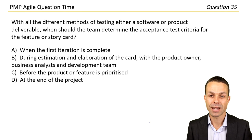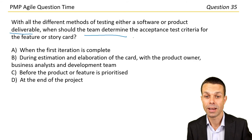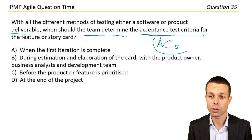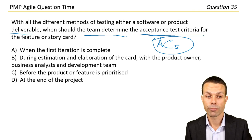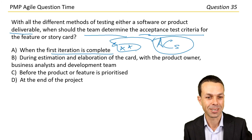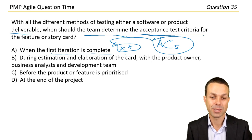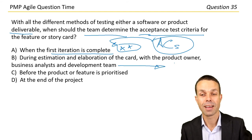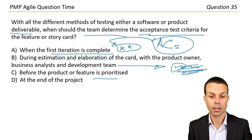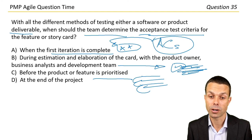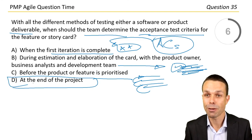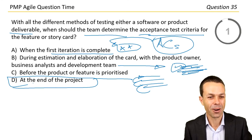With all the different methods of testing a software or product deliverable, when should the team determine the acceptance test criteria for the feature or story card? Options: when the first iteration is complete; during estimation and elaboration of the card with the product owner, business analysts, and development team; before the product or feature is prioritized; or at the end of the project.